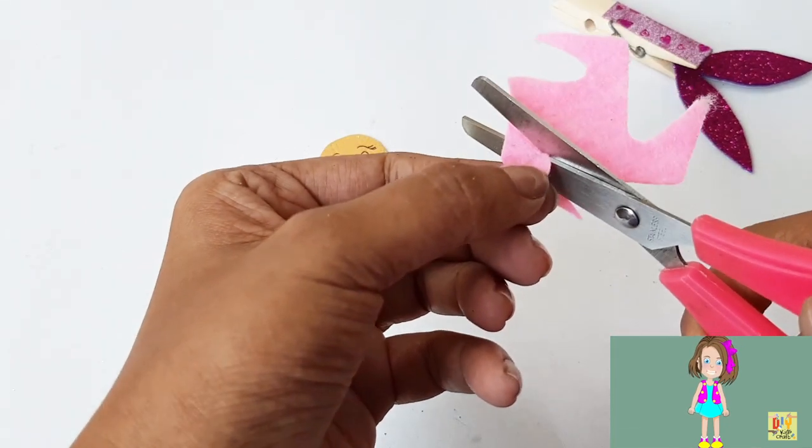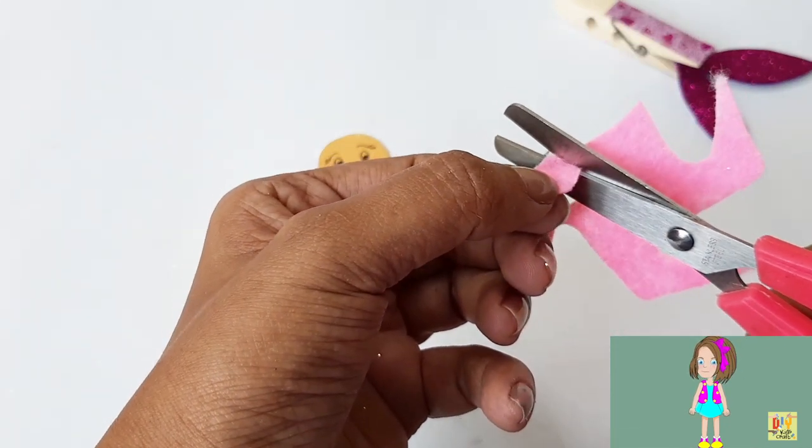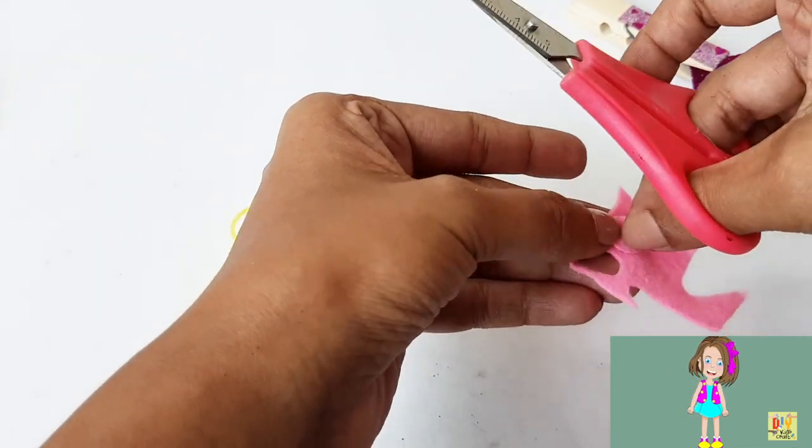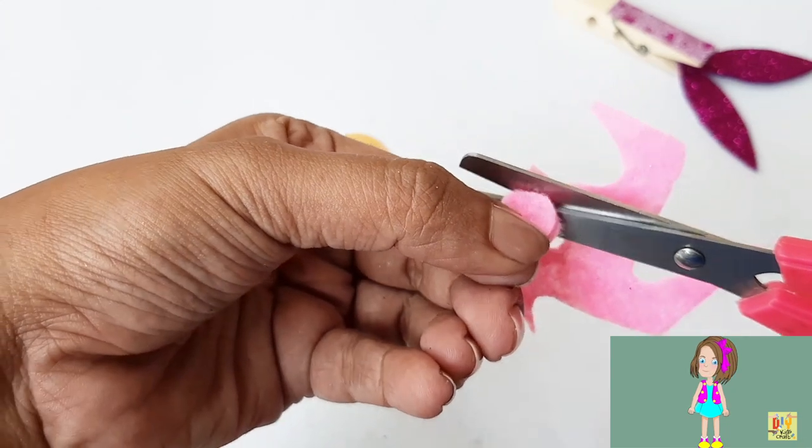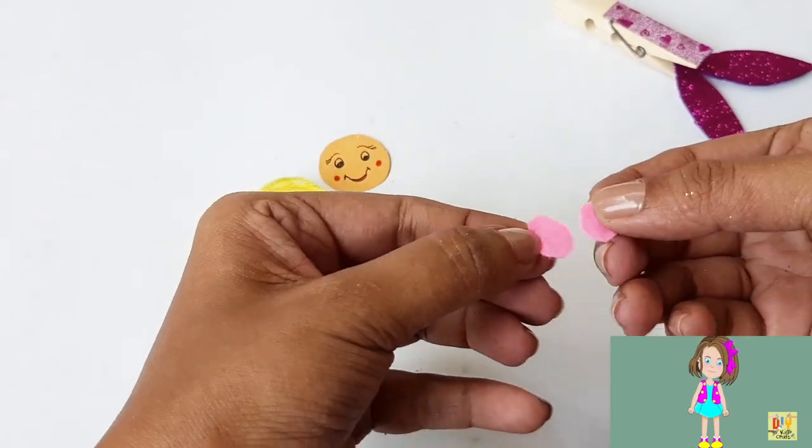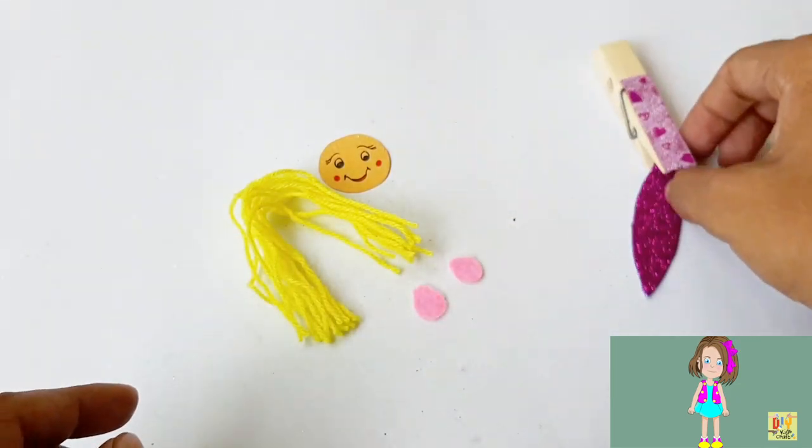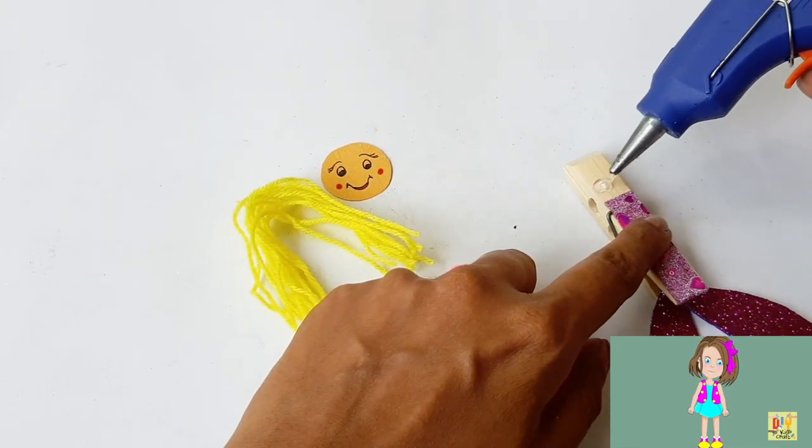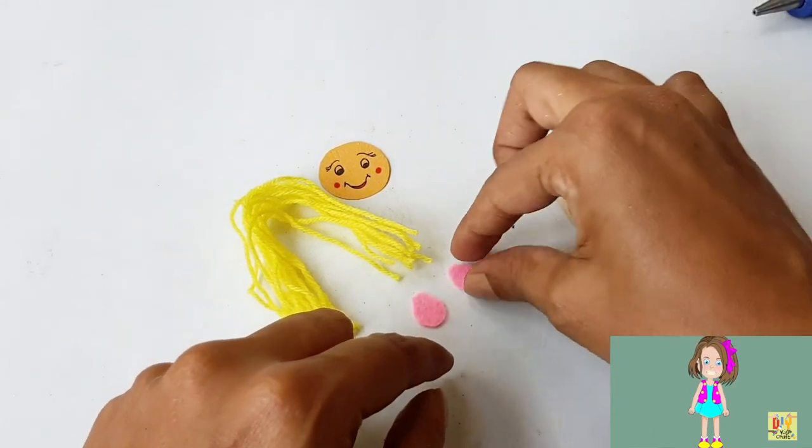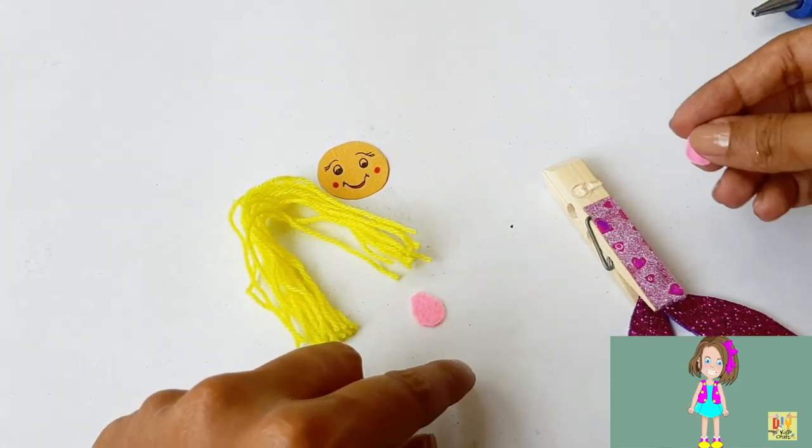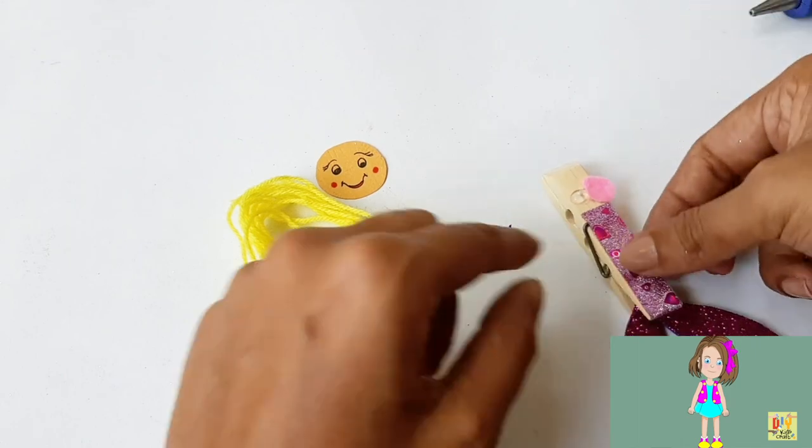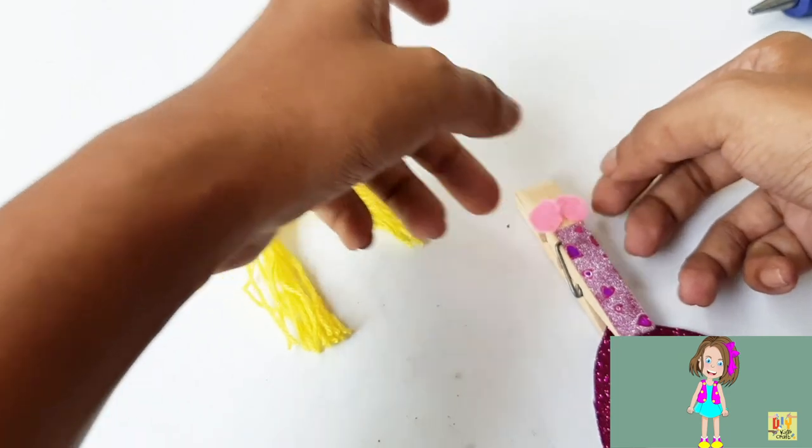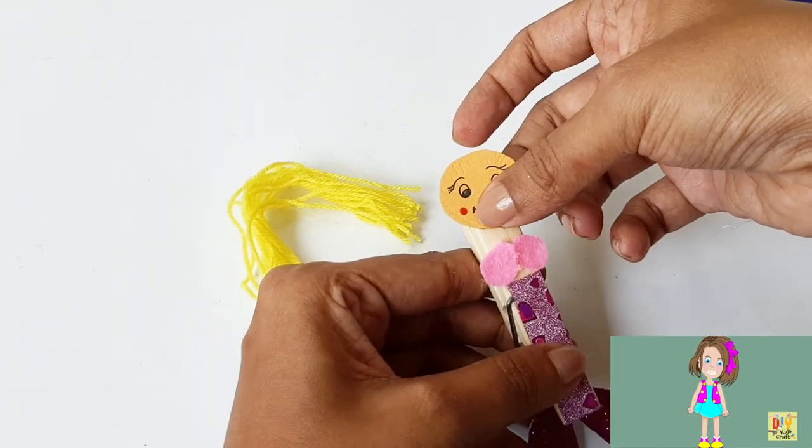A triangle shape with the same size. Using a glue gun, let's take our pink color triangular shape to our clothespin. Kids, make sure that you have an adult using the glue gun.